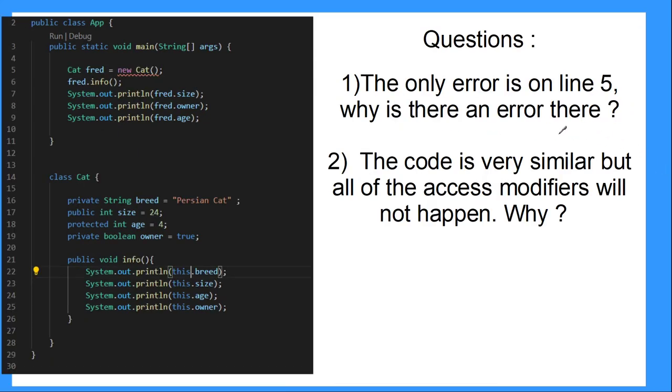So this is the last code that we're going to be looking at. If we see the code is very similar, except for we have one public class and our second cat class is within the class. And this is called nested classes. And it's a way of grouping classes together. So it's a valid way. However, there is an error.